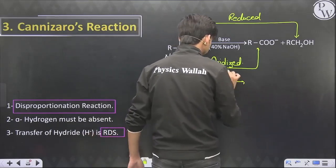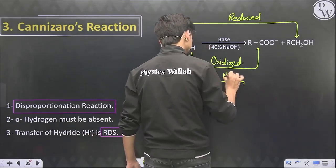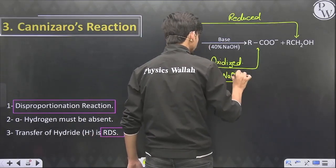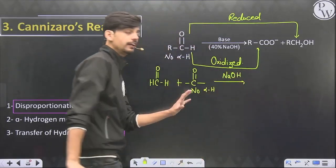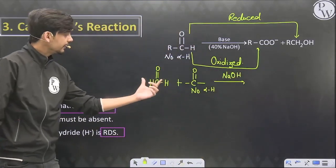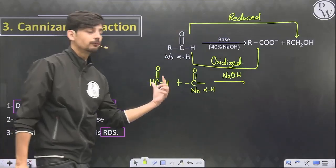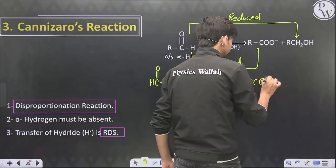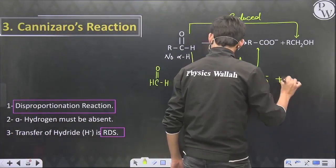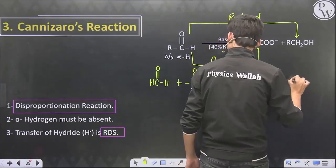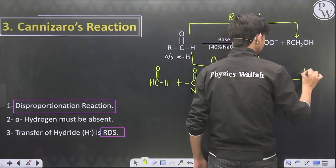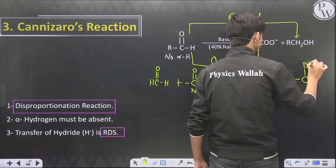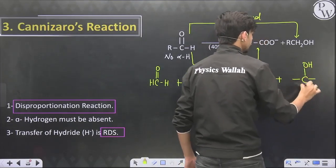In the Cannizzaro reaction, if we have formaldehyde and any other carbonyl compound having no alpha hydrogen, the formaldehyde molecule is always oxidized and the other molecule is reduced to alcohol.